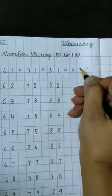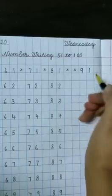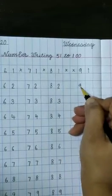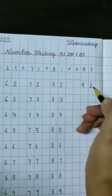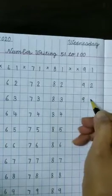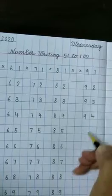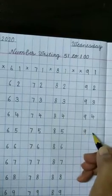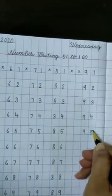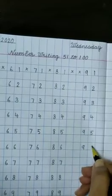After 90, write 91. Then 92, 93, 94, 95, 96.